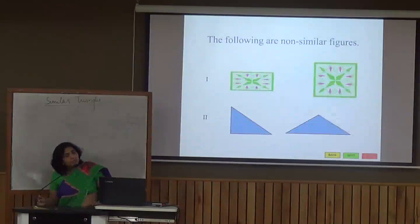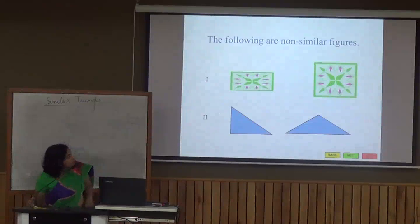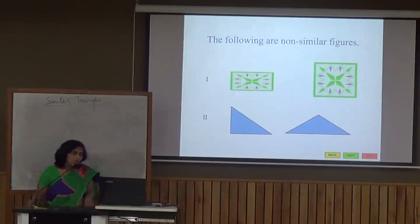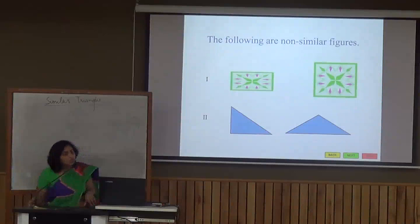Now these are a few non-similar figures. In the first figure, one is a rectangle and one is a square, so they do not look alike. In another example, both triangles — one is a right triangle and another is an acute triangle — so they are non-similar figures.